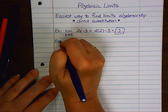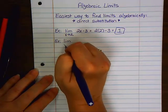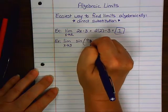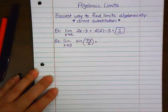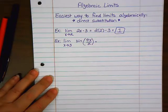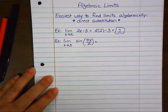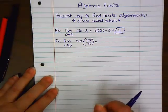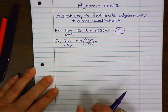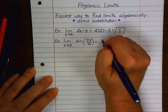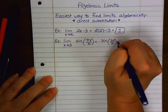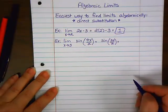Next problem. The limit as X approaches 3 of sine, parentheses, pi X divided by 2 equals. Can I substitute the 3 in there and get something that I should be able to solve if I remember my trig? Yes. So write sine. What should I write? Sine of what? 3 pi over 2.